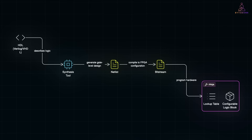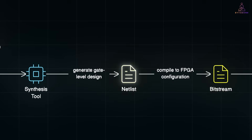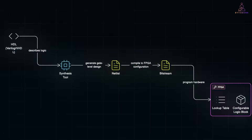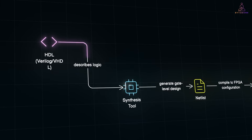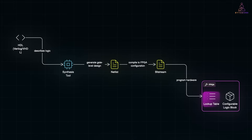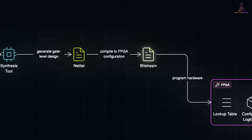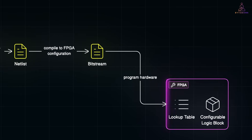It's like a compiler, but instead of generating machine code, it generates a netlist — a low-level blueprint of how logic gates and connections should be laid out in hardware. In essence: HDL describes a behavior, synthesis tools map that behavior to LUTs and wiring, and finally a bitstream is generated to program the FPGA.